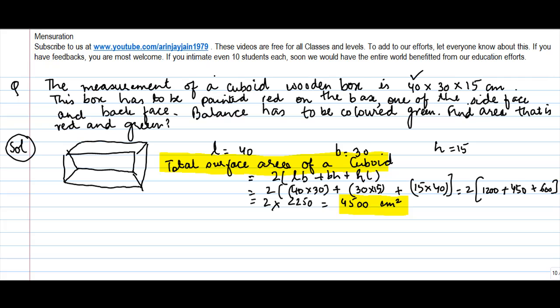Now, this area is covered into two parts. The box has to be painted red on the base, one of the side face and the back face. Balance has to be colored green. Find area that is red and green.